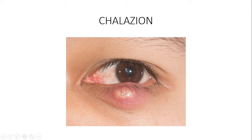Chalazion is found within the eyelid — it can be in the lower eyelid or the upper eyelid. If we talk about which group of people it is common in, it can be found in all age groups but mostly in people between 30 and 50 years of age, though of course it can also be found in younger people and those older than 50.